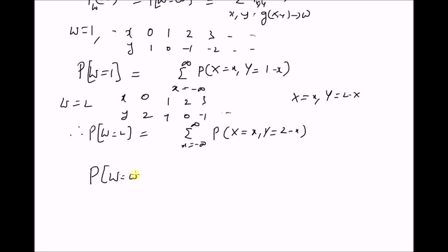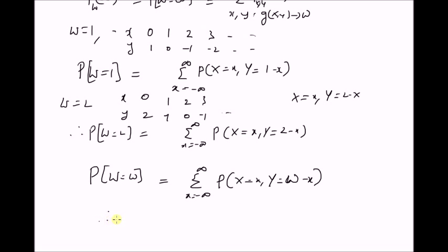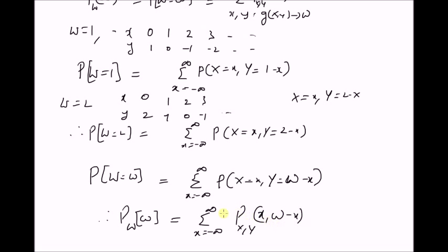By extension, to any value of w, that is the probability of W equal to small w, we can clearly extend this definition to the summation from x equals minus infinity to plus infinity of the probability of X equal to x and Y equal to w minus x. This can be rewritten as the PMF of the new random variable W, which is the sum of the two random variables X and Y, equal to the summation from x equals minus infinity to plus infinity of the joint PMF at values (x, w minus x), and thus the theorem is proved.